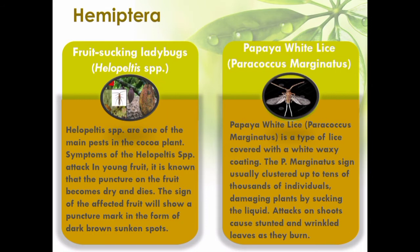Papaya white lice, or Paracoccus marginatus, is a type of lice covered with a white waxy coating. Paracoccus marginatus usually clusters up to tens of thousands of individuals, damaging plants by sucking the liquid. Attacks on shoots cause the leaves to become shrunken and wrinkled as if burned.